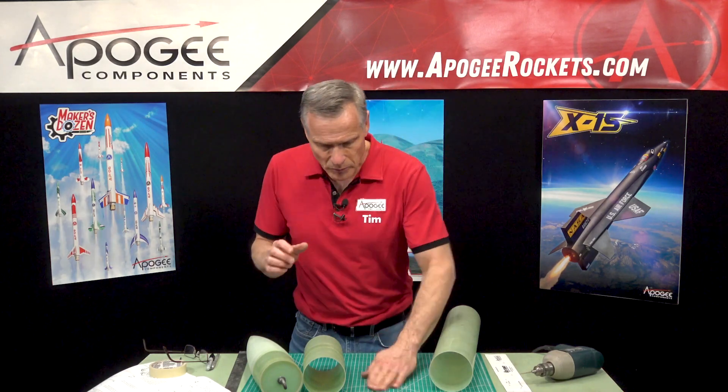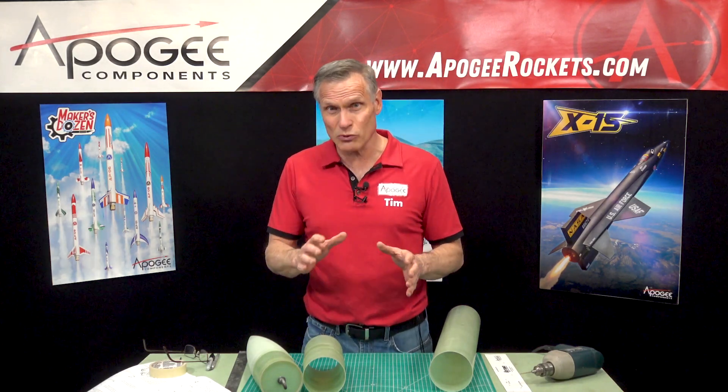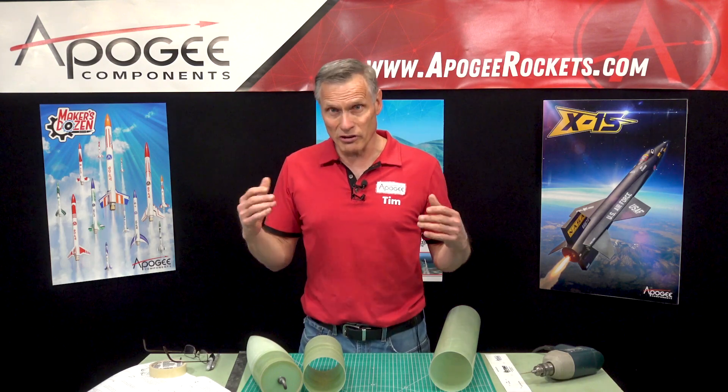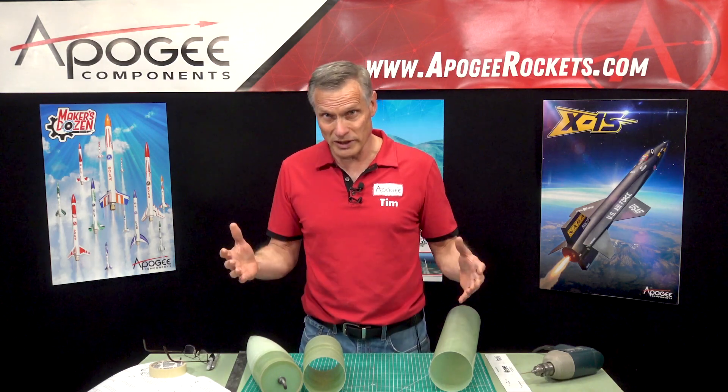but before I can do that I want to drill some holes into the tube for some plastic rivets and these plastic rivets are so that the rocket stays together during flight at a point where we want it to stay together.